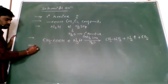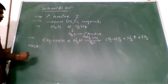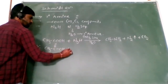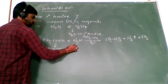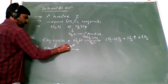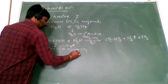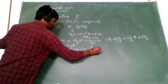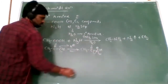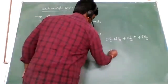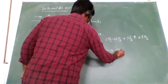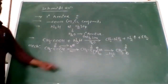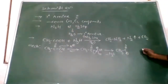Now the mechanism. First, the carboxylic acid CH₃COOH reacts with H₂SO₄. Oxygen gives a lone pair of electrons to H⁺, forming CH₃COOH₂⁺. Oxygen gets positive, so electrons shift to the oxygen side. Now remove the water molecule, giving CH₃CO⁺.